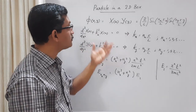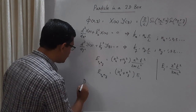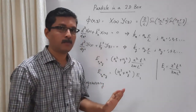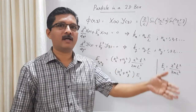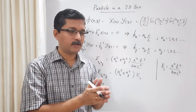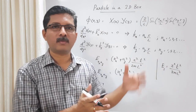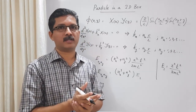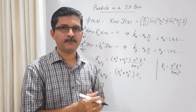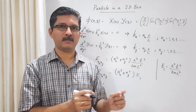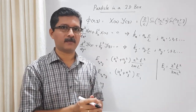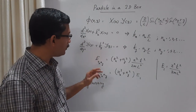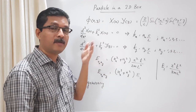An important feature that comes in the two-dimensional box as well as the three-dimensional box is degeneracy. In a particle in a one-dimensional box, corresponding to one energy eigenvalue you have one energy eigenfunction. For each n, you have one energy value n²π²ħ²/2mL², and for each n you have one energy eigenfunction (2/L)^(1/2) sin(nπx/L). Corresponding to each eigenvalue, you have one eigenfunction — that is called the non-degenerate case.